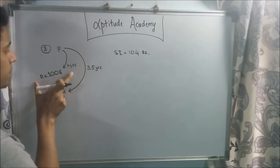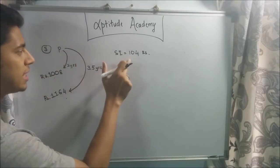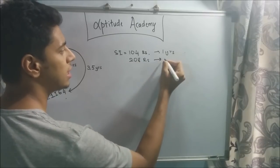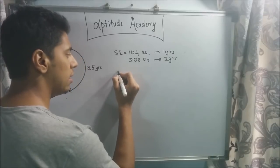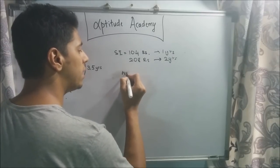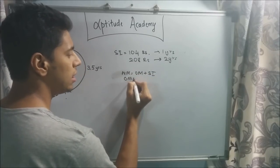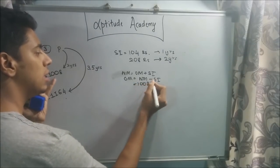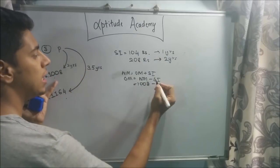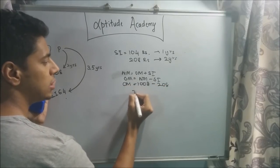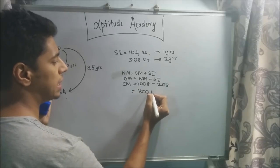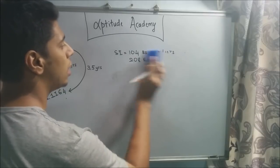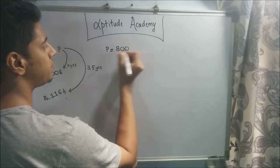SI per year is 104. For two years it will be 208 — double of 104. Using old money equals new money minus SI: new money after two years is 1,008 minus SI for two years which is 208. Old money equals 1,008 minus 208, which is 800 rupees. So the principal amount is 800 rupees.